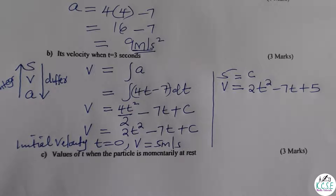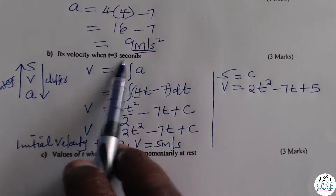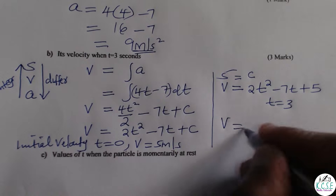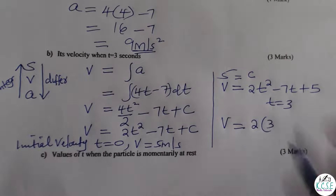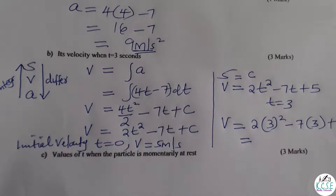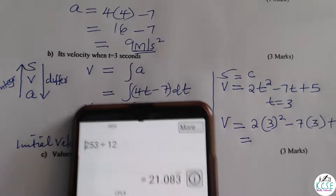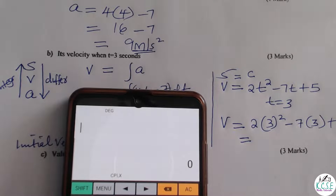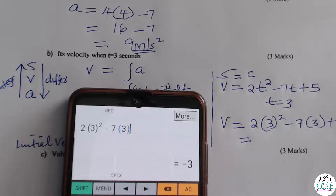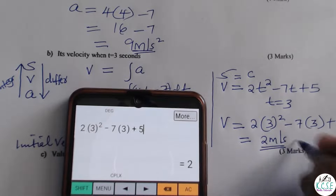Now answer the question: what is the velocity when t equals 3? Substitute t equals 3 into the velocity expression: v equals 2(3 squared) minus 7(3) plus 5. Working this out gives v equals 2 meters per second.